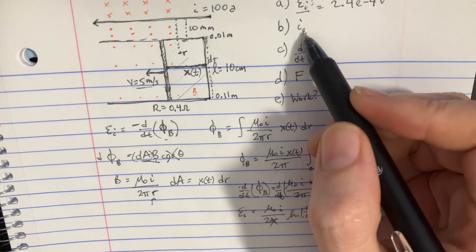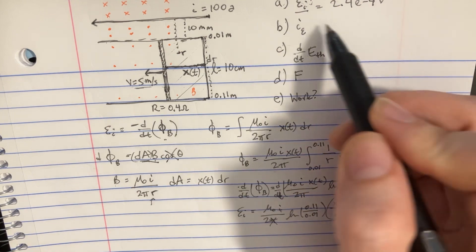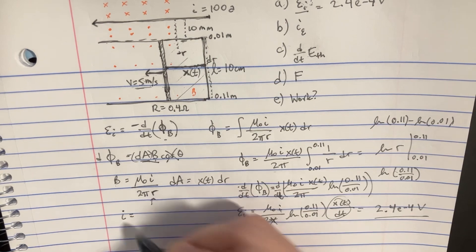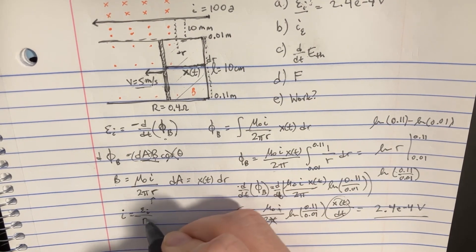So the induced emf is going to be 2.4 e to the negative 4 volts. Now for the next one, the induced current. Well, since we know the emf that's induced, we actually know that we have another equation for induced current.